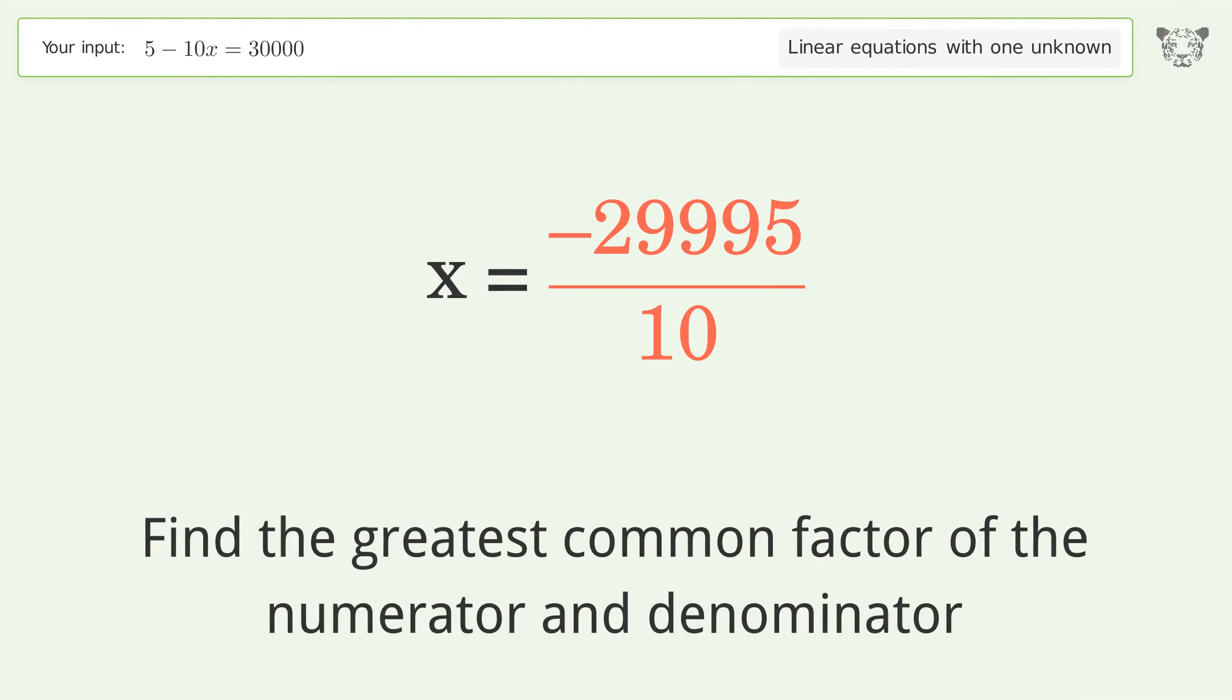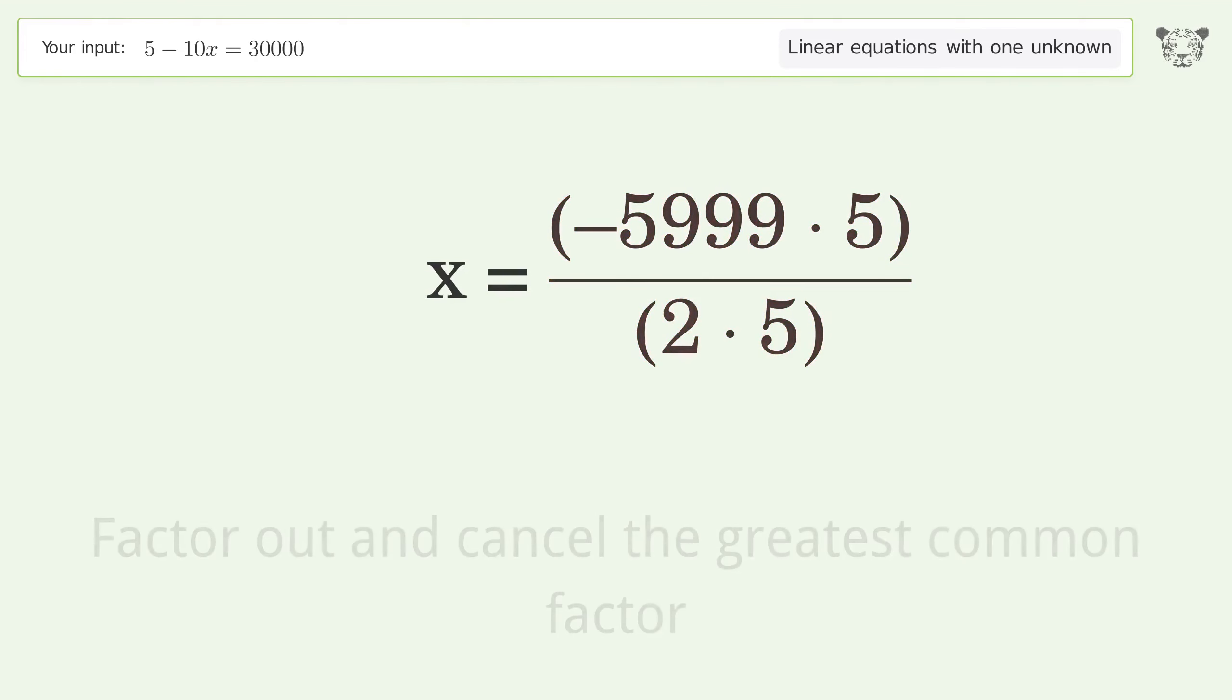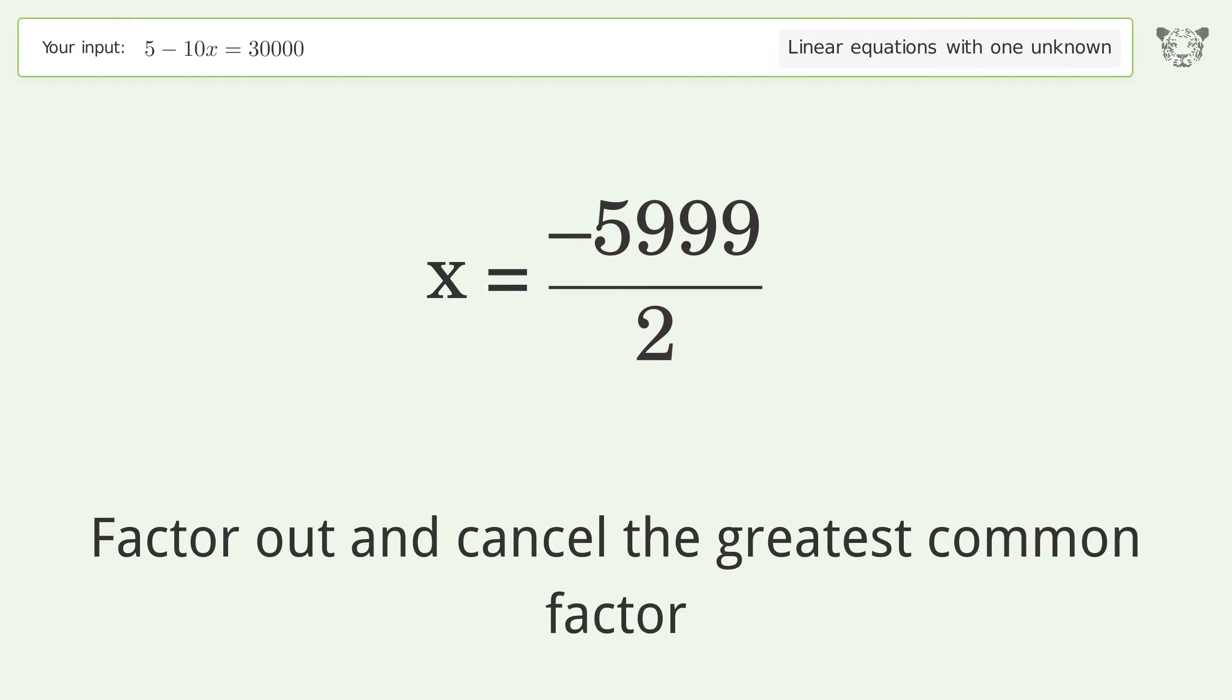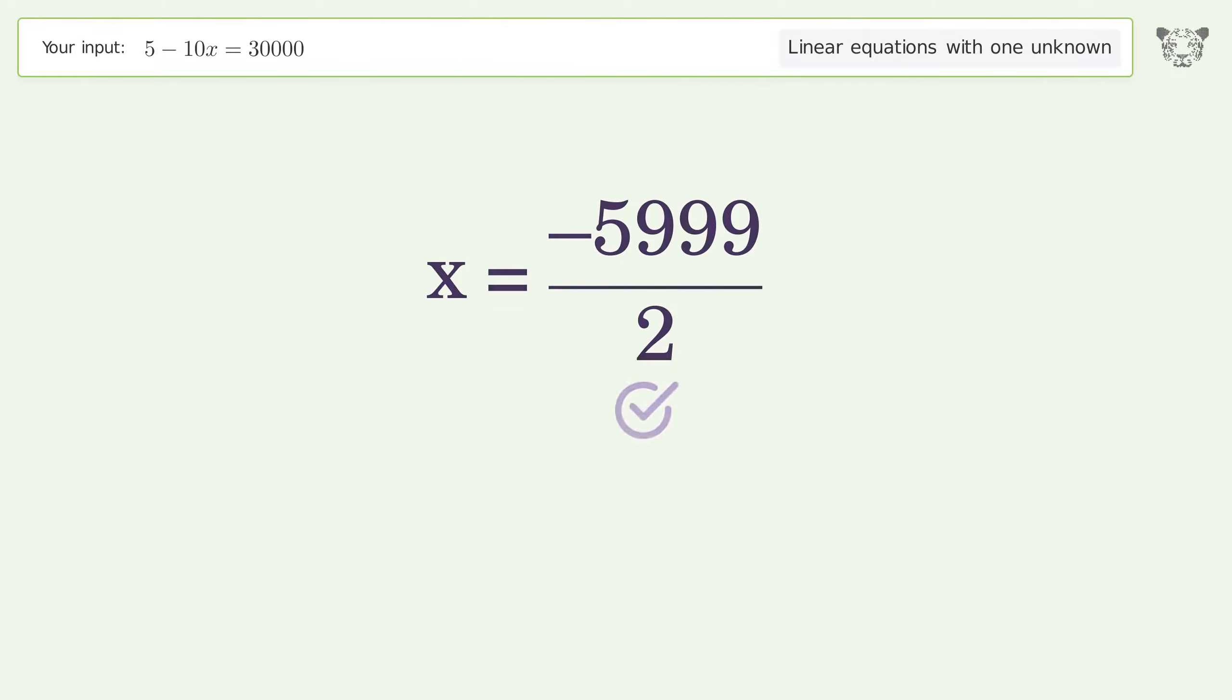Find the greatest common factor of the numerator and denominator. Factor out and cancel the greatest common factor. And so the final result is x equals negative 5999 over 2.